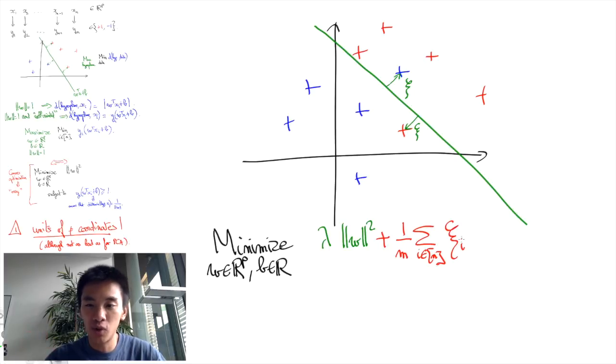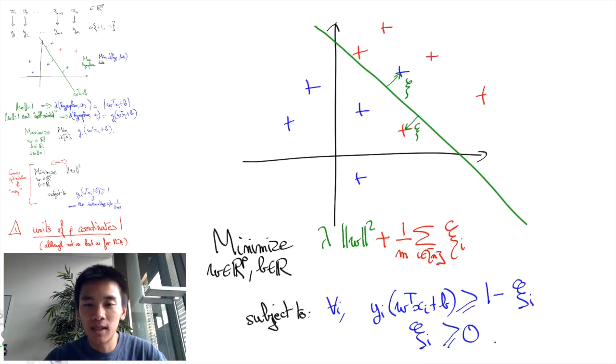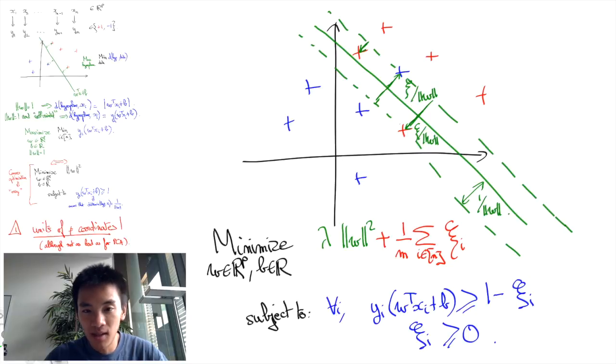Using our dual program, the error for data i can be computed by a slack variable xi i yielding the following optimization problem. We're going to minimize over W, B and the vector xi, the vector of errors for each data i, lambda times the norm of W squared